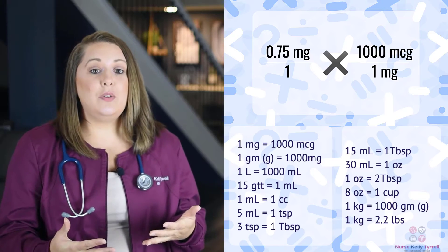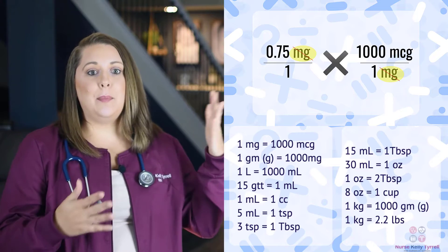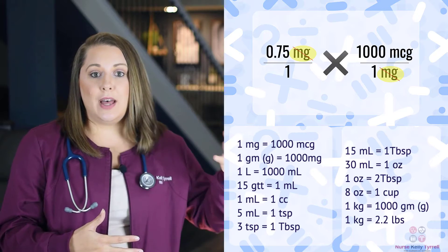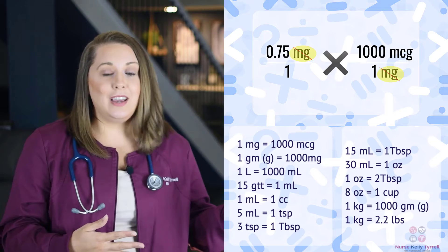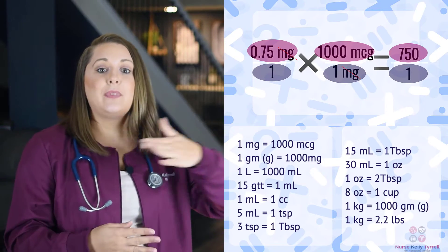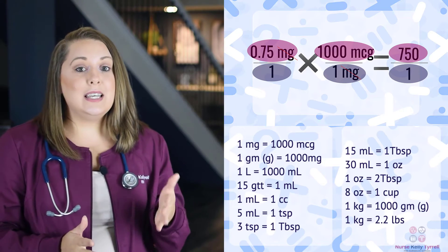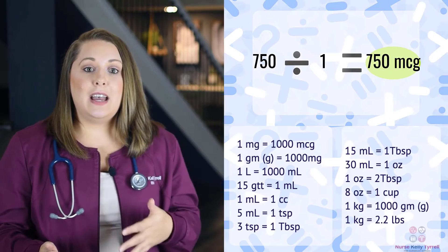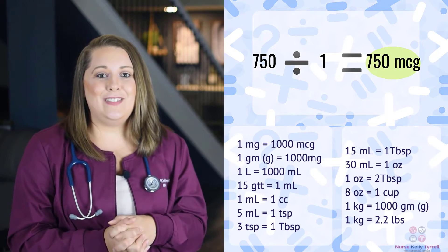Our milligrams are going to cancel each other out because we place them on opposite sides, diagonal from each other. Since milligrams cancel out, our desired measurement — micrograms — is what will be left. Next, we multiply straight across the top and then the bottom: 0.75 times 1000 is 750, and 1 times 1 is 1. Our last step is to divide 750 by 1, so our final answer is 750 micrograms.